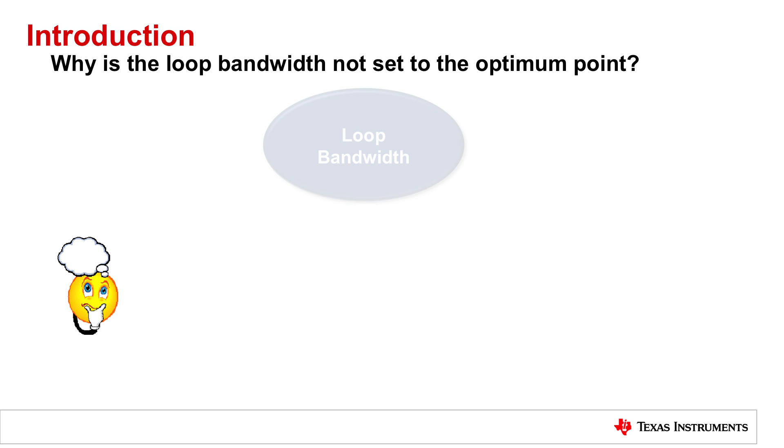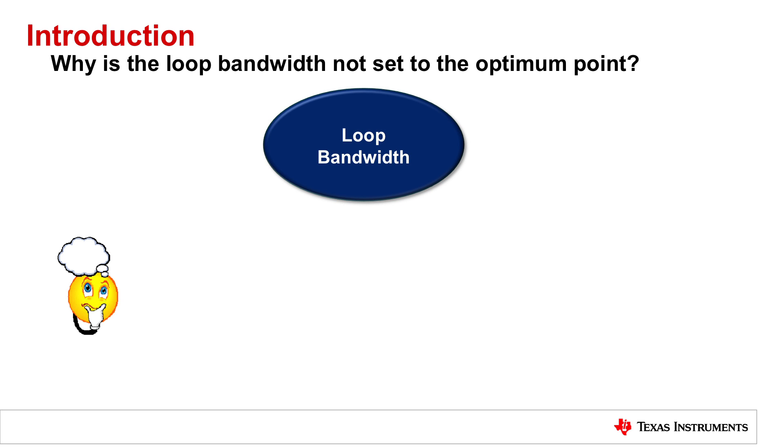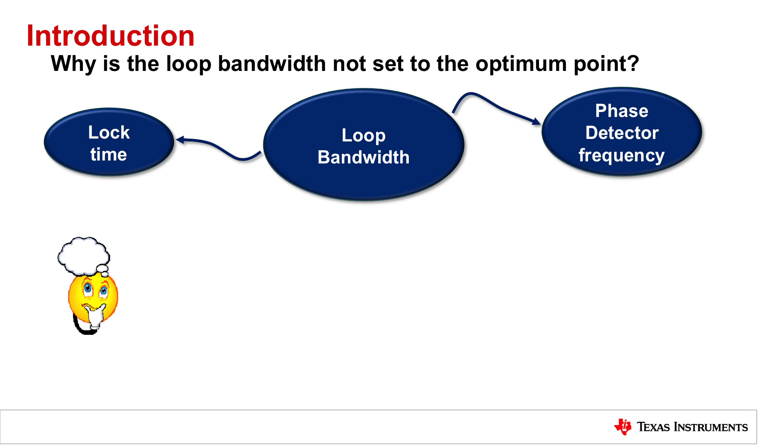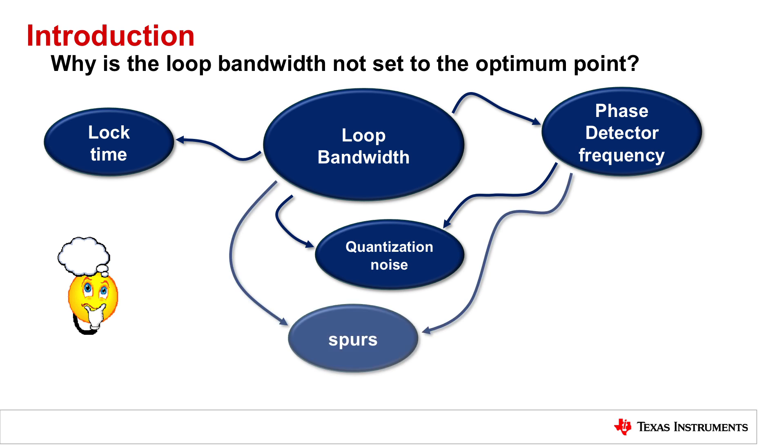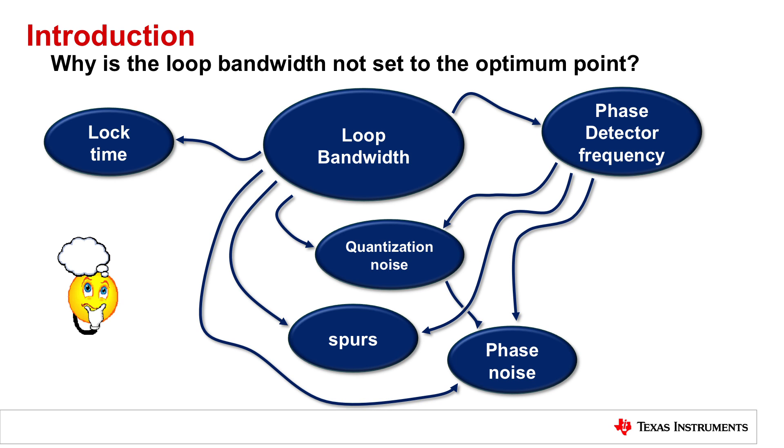As I was preparing this introduction, I thought of what is changing exactly when I change the loop bandwidth. The first thought that comes to mind was lock time, and then I started to think there's an interaction with the phase detector frequency and the quantization noise. The loop bandwidth is also having an impact on spur because the spurs that live inside the loop are being attenuated by the loop bandwidth, and all this is ultimately impacting the phase noise and the jitter.